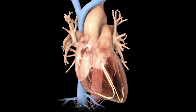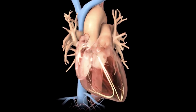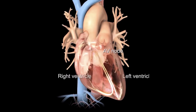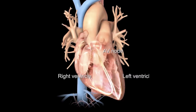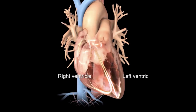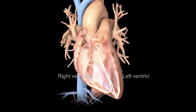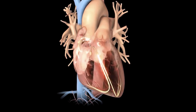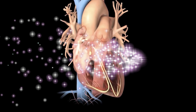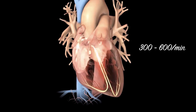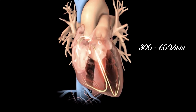The ventricles contract irregularly, leading to a rapid and irregular heartbeat. The rate of impulses in the atria can range from 300 to 600 beats per minute.